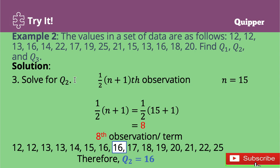Next, solve for the second quartile. Q2 is found at the one-half of (n + 1) observation. So one-half of (15 + 1) = one-half of 16 = 8. The second quartile is found at the 8th observation. In the arranged set of data, the 8th observation is 16. Therefore, Q2 = 16.